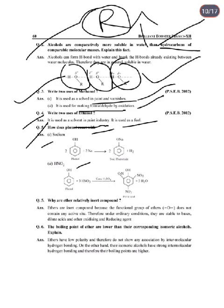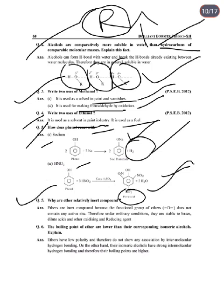Next: How does phenol react with sodium and nitric acid? With sodium: phenol forms sodium phenoxide and hydrogen gas. With concentrated nitric acid in the presence of concentrated sulfuric acid: phenol forms 2,4,6-trinitrophenol, also called picric acid.